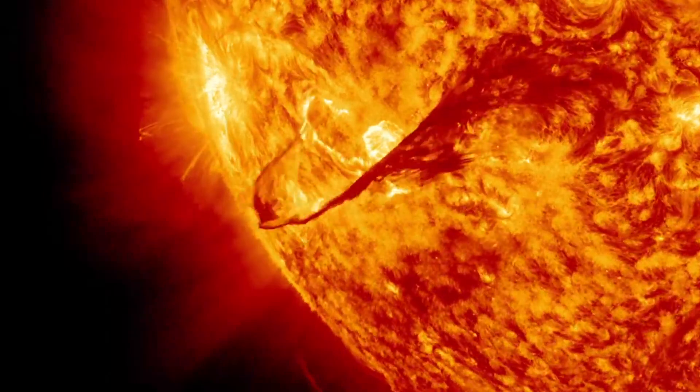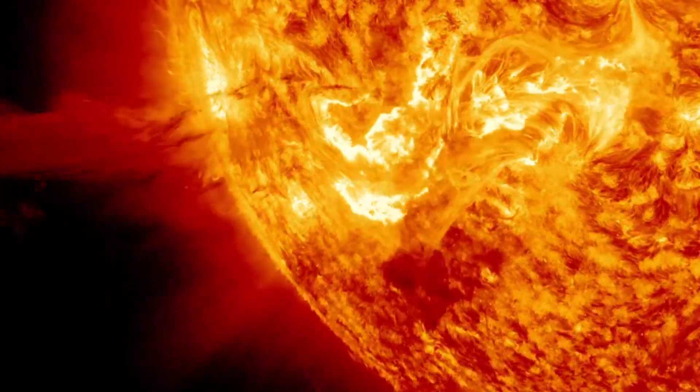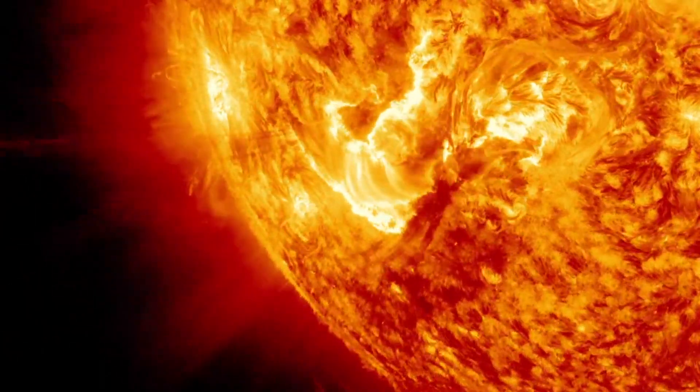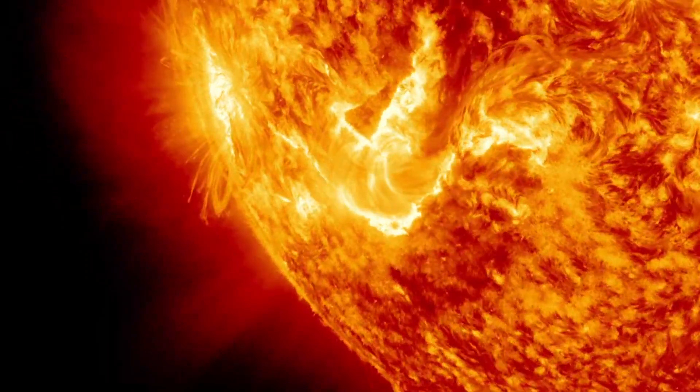A crucial attribute of a CME is the fact that it contains a magnetic cloud, which is the embedded magnetic field of the Sun. This is necessary for the formation of the aurora.